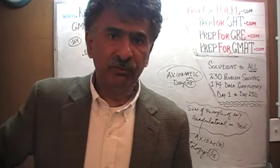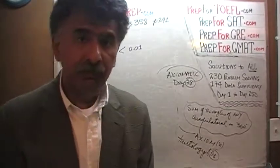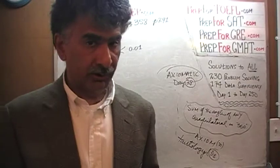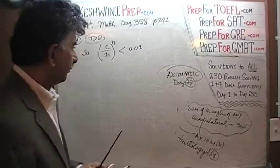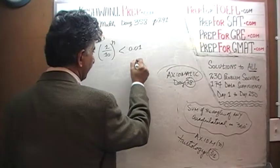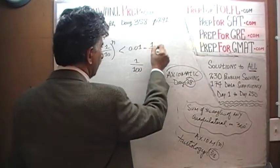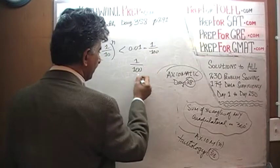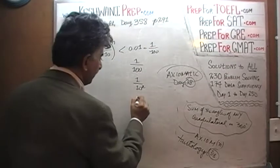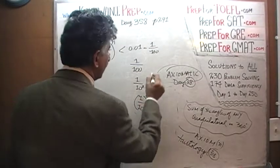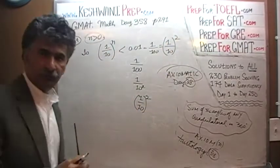Before we look at either of the two statements, it is always a good idea to understand and properly digest what is being asked. Let's simplify it. 0.01 is the same as 1 over 100, and 1 over 100 can be written as 1 over 10 squared, which in turn can be written as (1/10) whole squared.